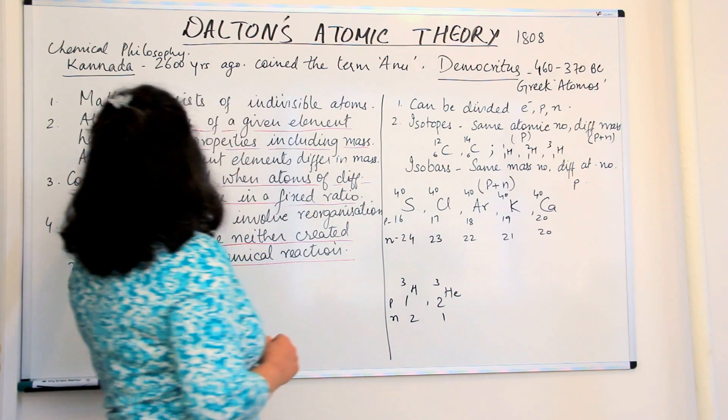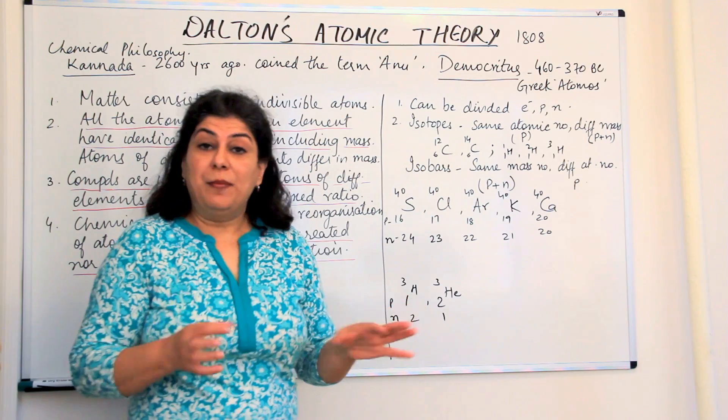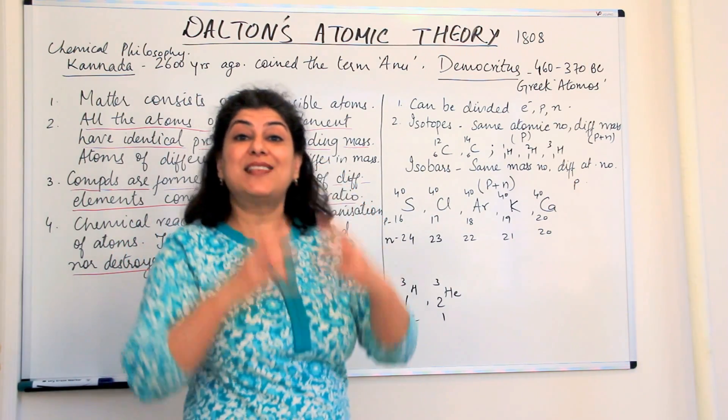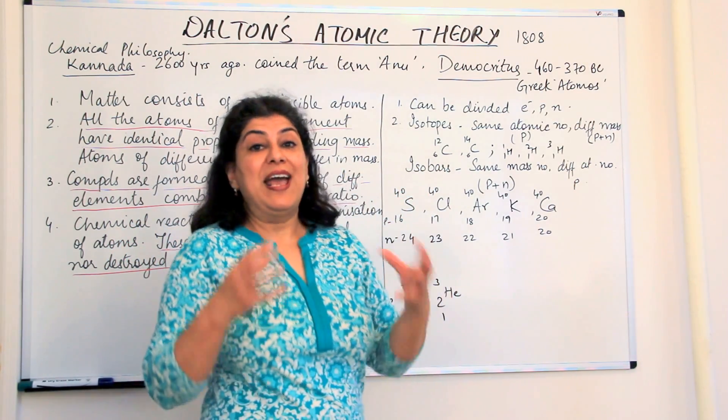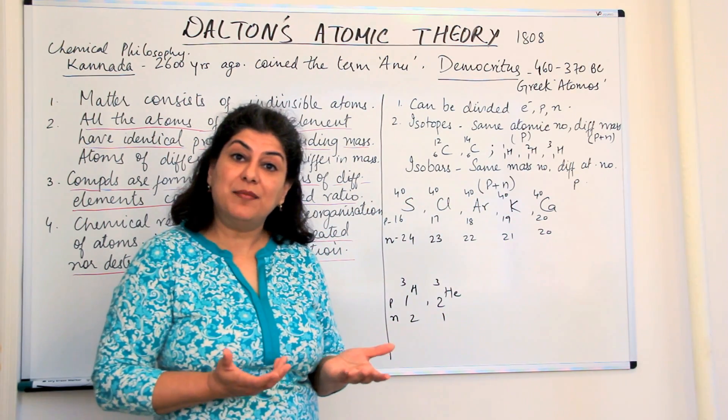On the other hand, he said that atoms of different elements differ in mass. This also wasn't true because the mass of an atom is the sum of neutrons and protons, and if the sum is the same, even if the elements are different, they would have the same mass number. Such elements were known as isobars.